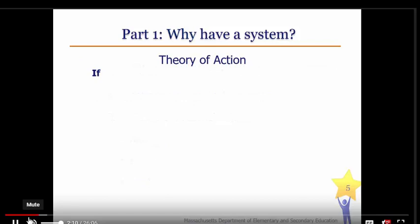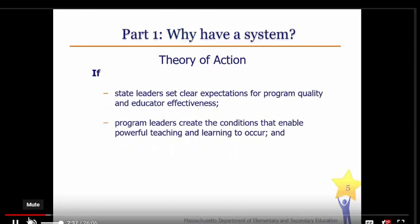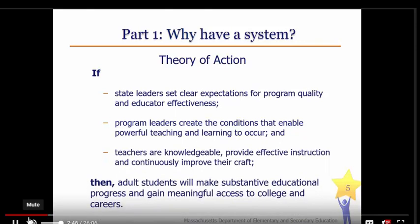The Massachusetts Educator Growth and Evaluation System is a critical component of the state's ongoing efforts to improve educator effectiveness. But it does take a village, or in this case, a theory of action. Teachers, program directors, and ACLS all have key roles to play in ensuring the success of our adult learners. The state needs to set clear expectations. Program directors need to establish a culture of continuous improvement and provide opportunities for growth. And teachers need to take advantage of learning opportunities to gain the knowledge and expertise needed to be effective in the classroom.